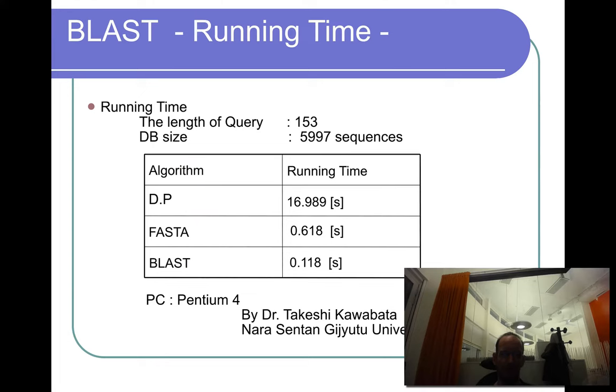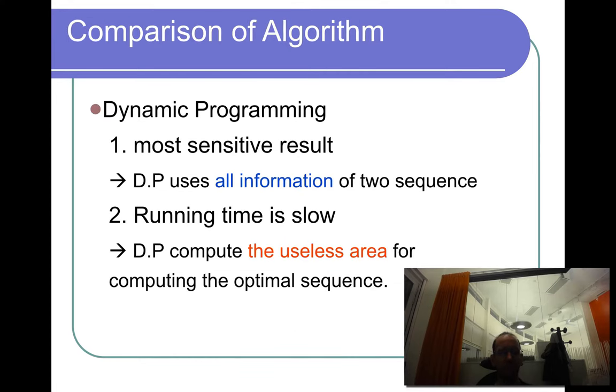So here's an example. This was like five times faster than FASTA, and FASTA algorithms are 20 or 100 times faster than dynamic programming.